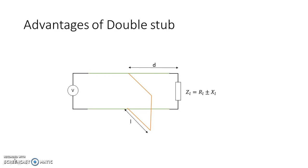In the single stub matching network, it is really difficult to get the exact location on the transmission line to place the stub. With the double stub matching network, since D is stable, we can find an appropriate position and the tuning will be better. These are the two basic advantages of using a double stub matching network.